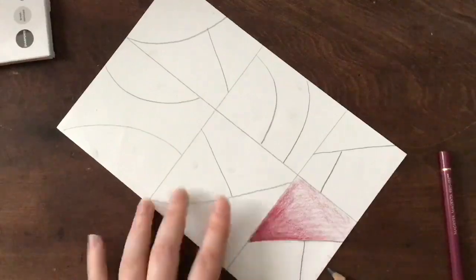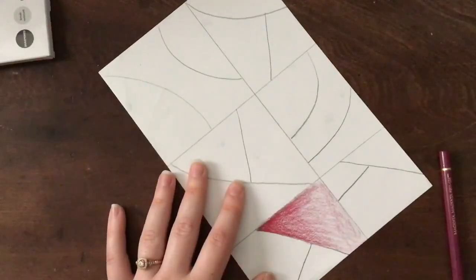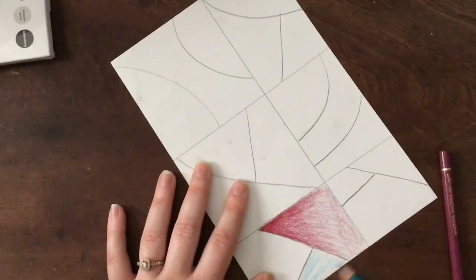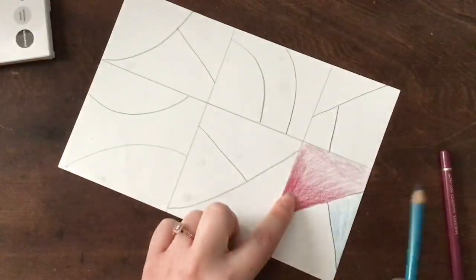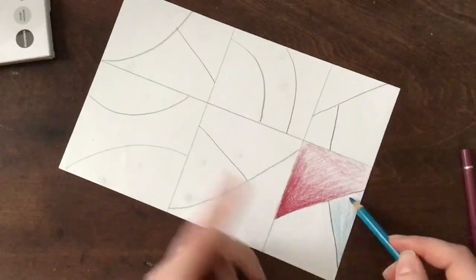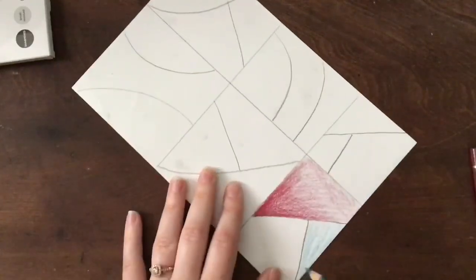I'm going to go ahead and choose another color. Now when I add the shading to this box, I'm going to want to make sure I don't have my dark shades too close together. I want to be able to create difference. So I'm going to put my darker shade down here in the bottom corner of this triangle.